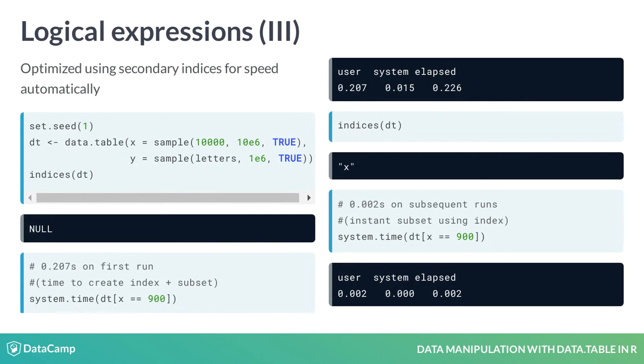Let's look at an example. First we create a data table dt with 10 million rows. When we call indices on dt we see that the result is null. Thus at this point the data table has no indices. When we perform a subset operation for the first time we can see that it takes about 0.2 seconds. Now when we run indices on dt again notice that x is an index. So when we perform the same operation again it takes only about 0.002 seconds.